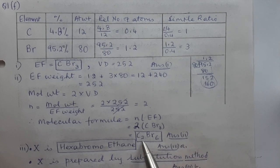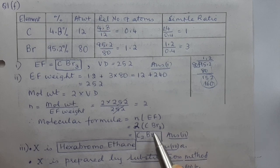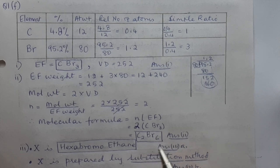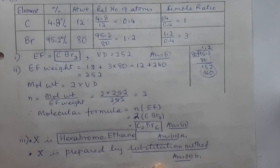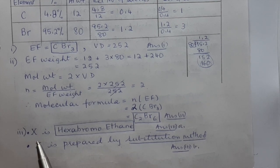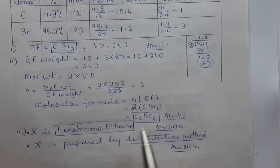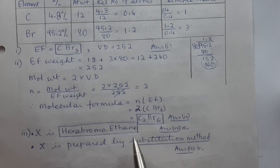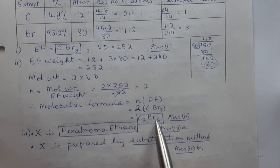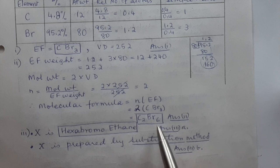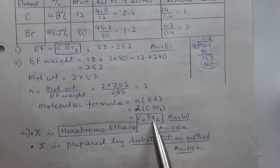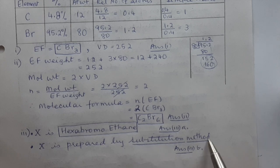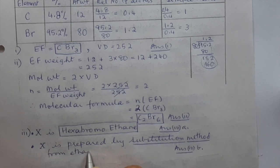C₂Br₆ is the derivative of ethane (C₂H₆) where all hydrogens are substituted with bromine. The name of compound X is hexabromoethane (two carbons, single bond, so 'ethane'). It is prepared from ethane by a substitution reaction — that is answer three.